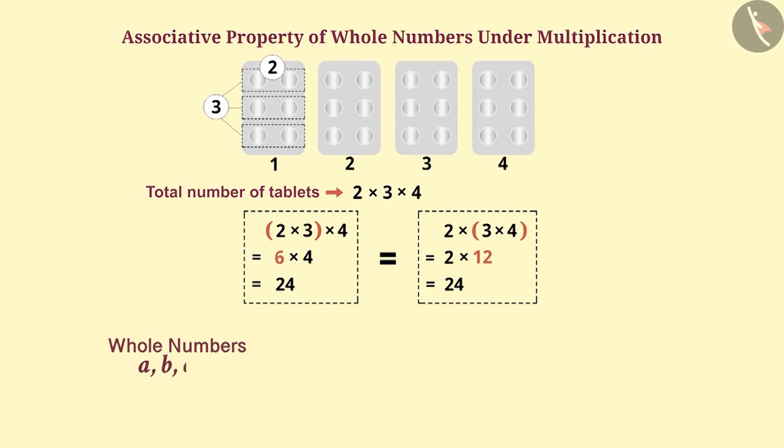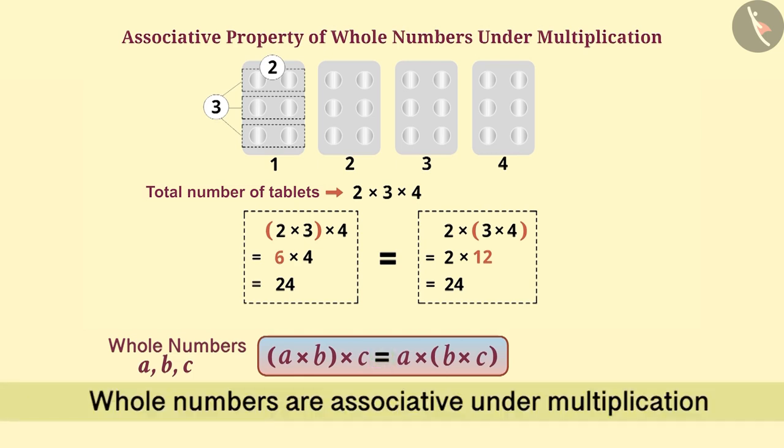In this way, any 3 whole numbers A, B and C can be multiplied by grouping in any order. The result of A into B into C is equal to A into B into C will be the same. Therefore, whole numbers are associative under multiplication.